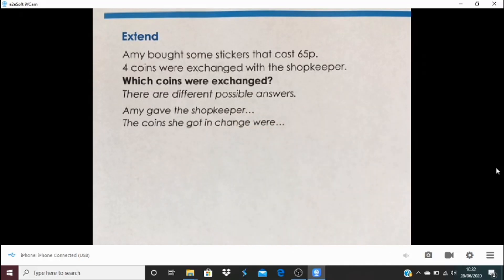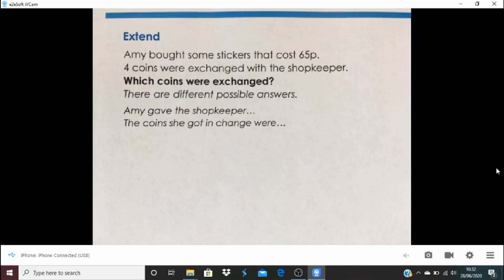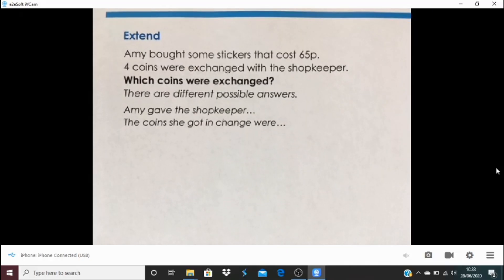I think this is a question where it's possible to find an answer, but knowing I found all the different answers, wow the challenge is enormous there. Now my system would be: is there a way that she could have paid 65p using exactly four coins? So I'll probably start with a 50p and then a 5p and a 5p and a 5p.